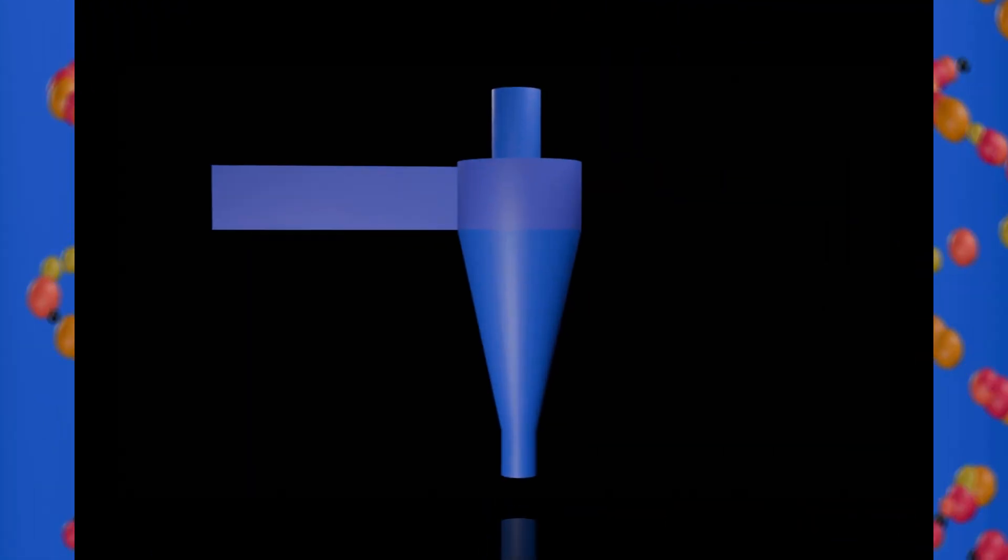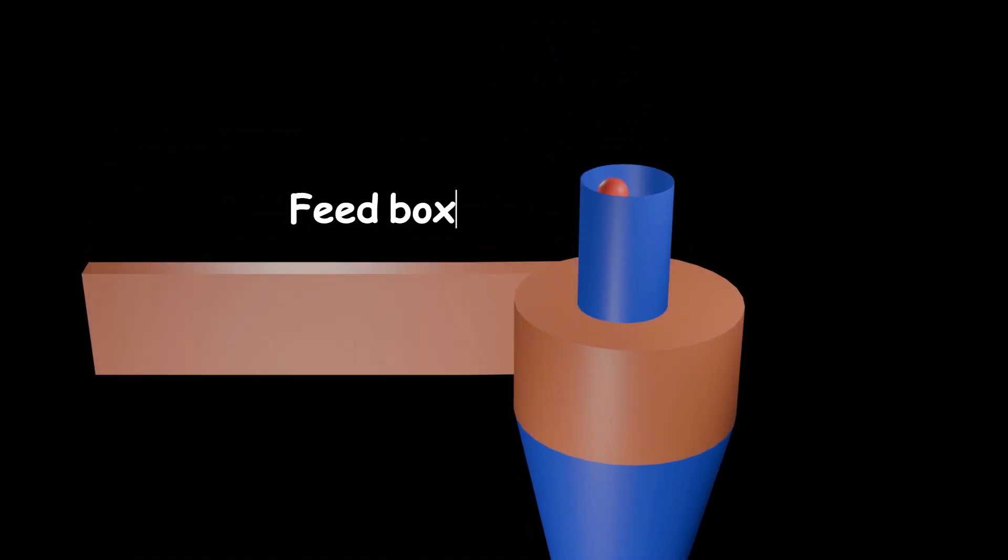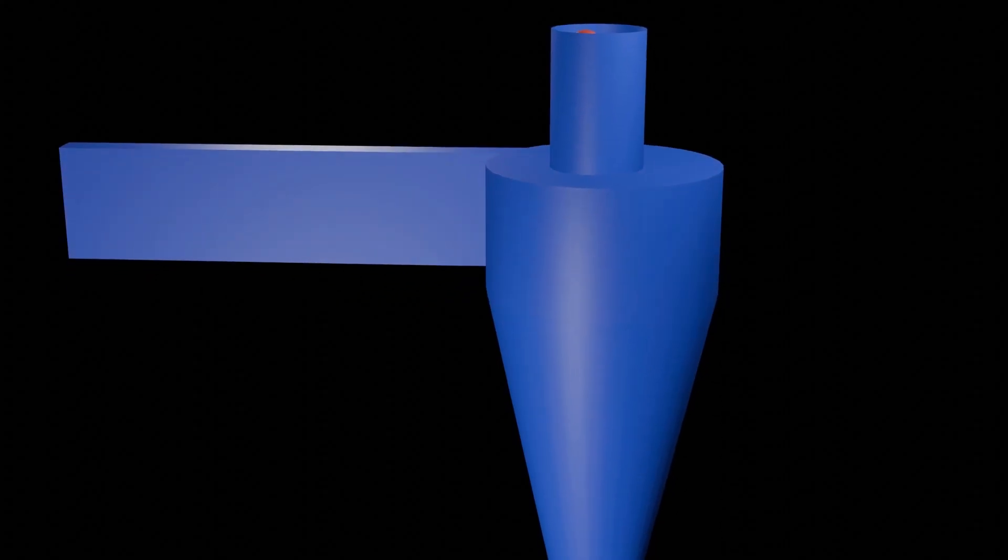The cyclone is made up of four main parts. The top section is known as the feed box where the gas enters tangentially and forms a vortex. This is because the gas follows the curvature of the cyclone.